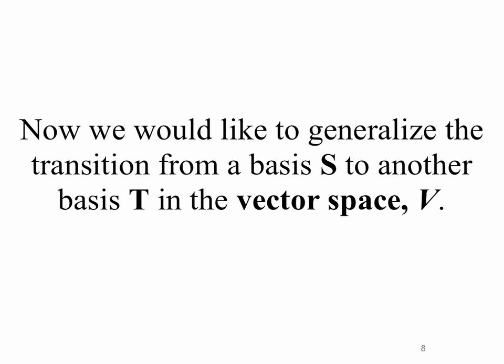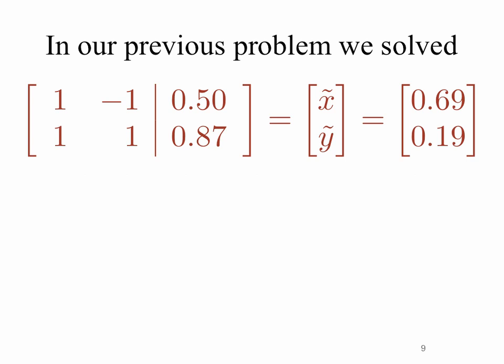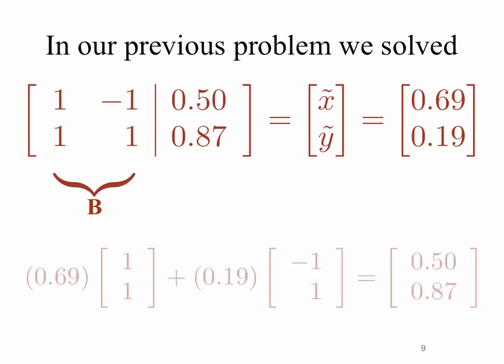Now we'd like to generalize the transition from a basis S to another basis T in the vector space V. In our previous problem we solved a system of equations: the two columns were the basis vectors for b, augmented with the vector in the standard basis (0.50, 0.87). We solved and got the representation of our vector in terms of the new basis x-tilde y-tilde, which was 0.69 and 0.19. So we see it's 0.69 times the first basis vector (1,1) plus 0.19 times the second basis vector (-1,1), which equals (0.50, 0.87).